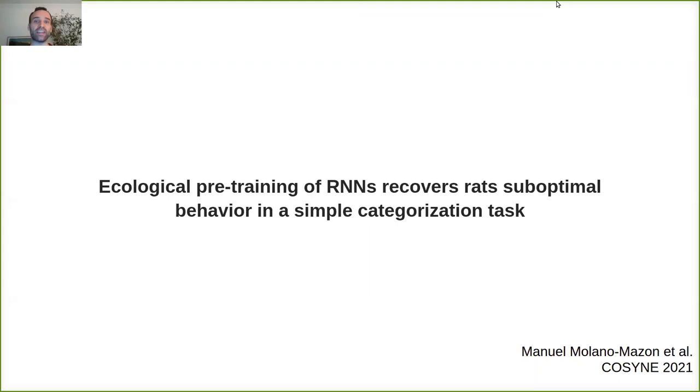In this work we show how pre-training recurrent neural networks on naturalistic environments can recover the behavior of rats performing two-alternative forced choice tasks.